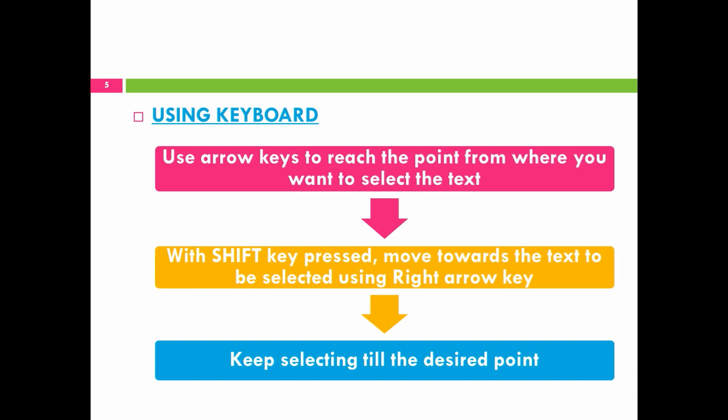Another way is using keyboard. The steps are: use arrow keys to reach the point from where you want to select the text, then with the shift key pressed, move towards the text to be selected using the right arrow key, and keep selecting the text till the desired point is achieved, or till you have done the desired selection.